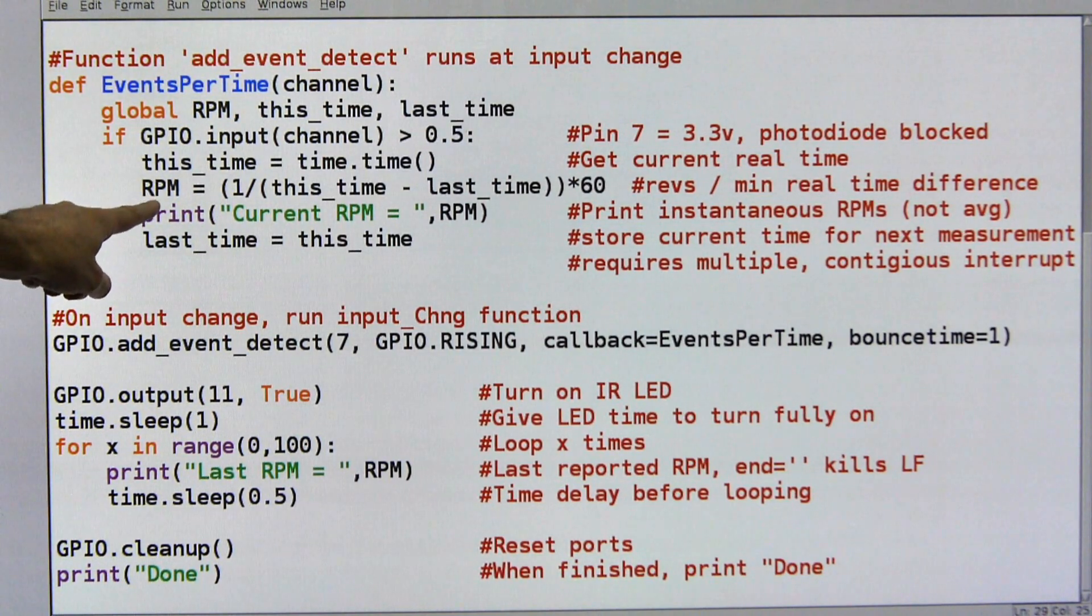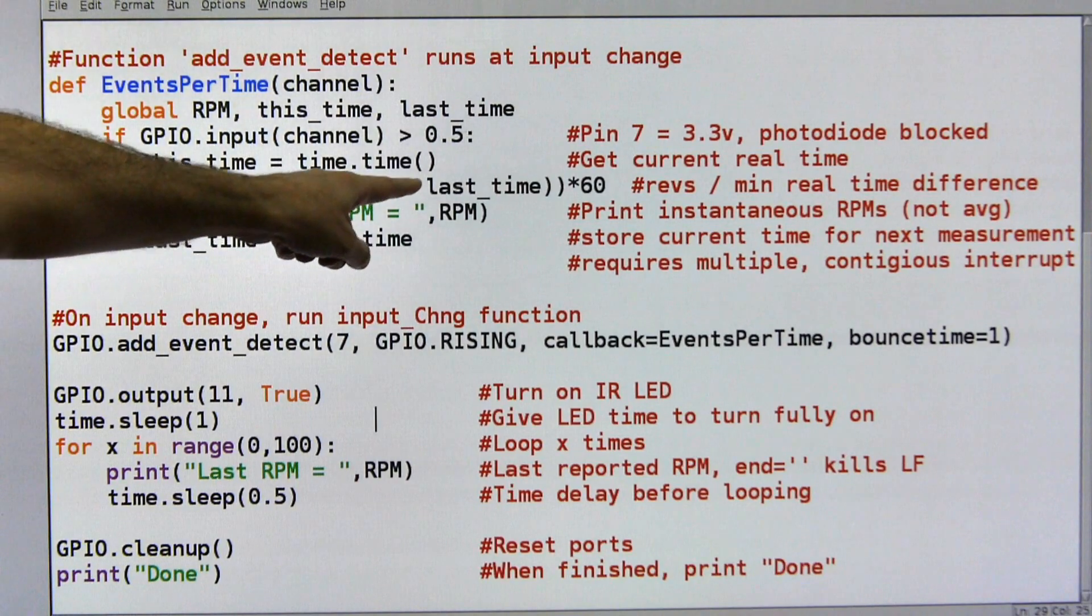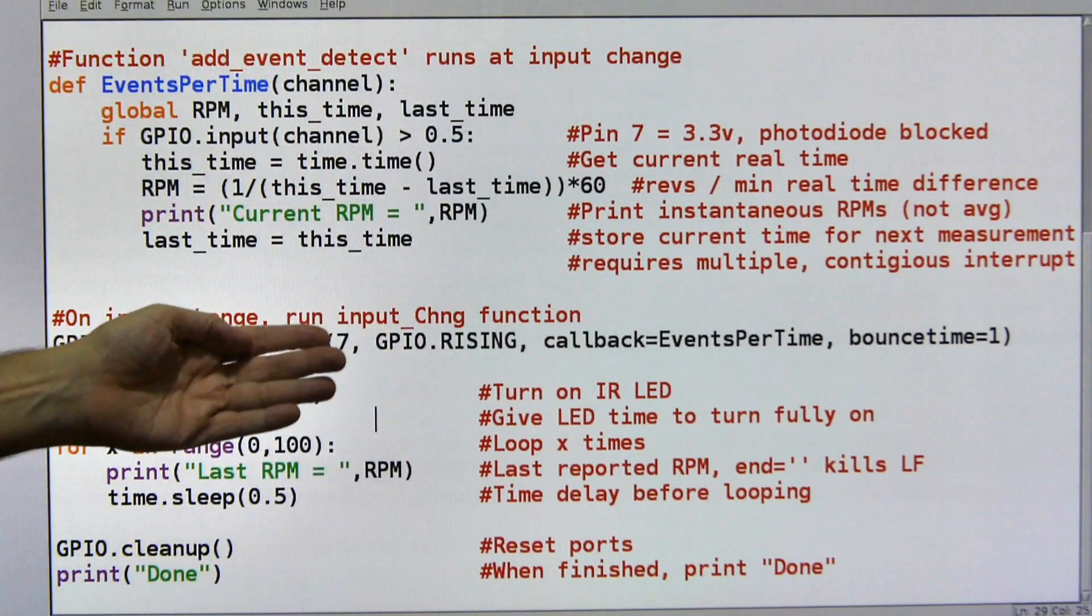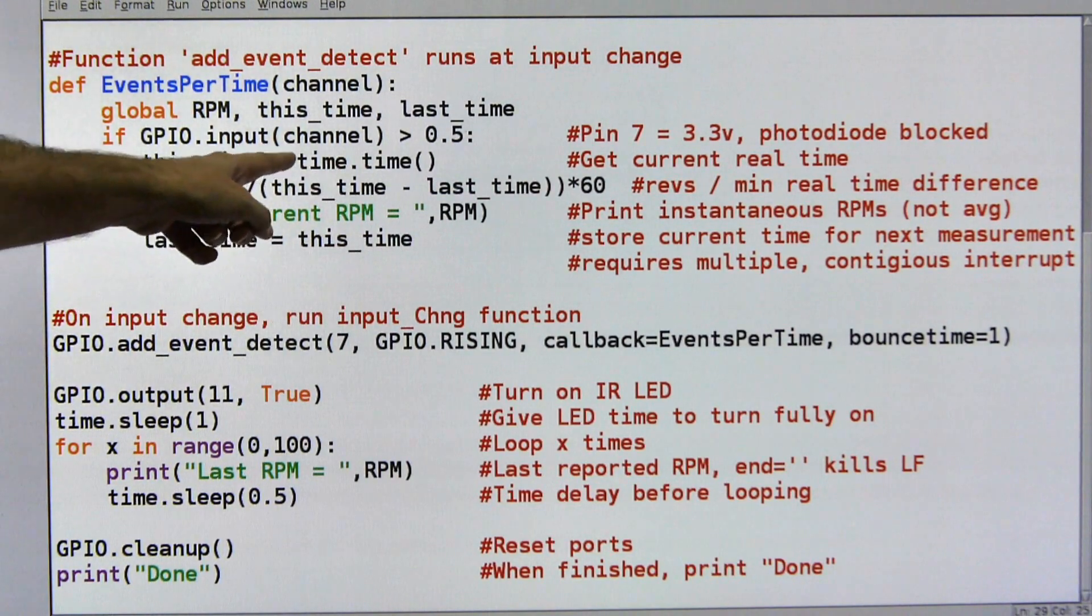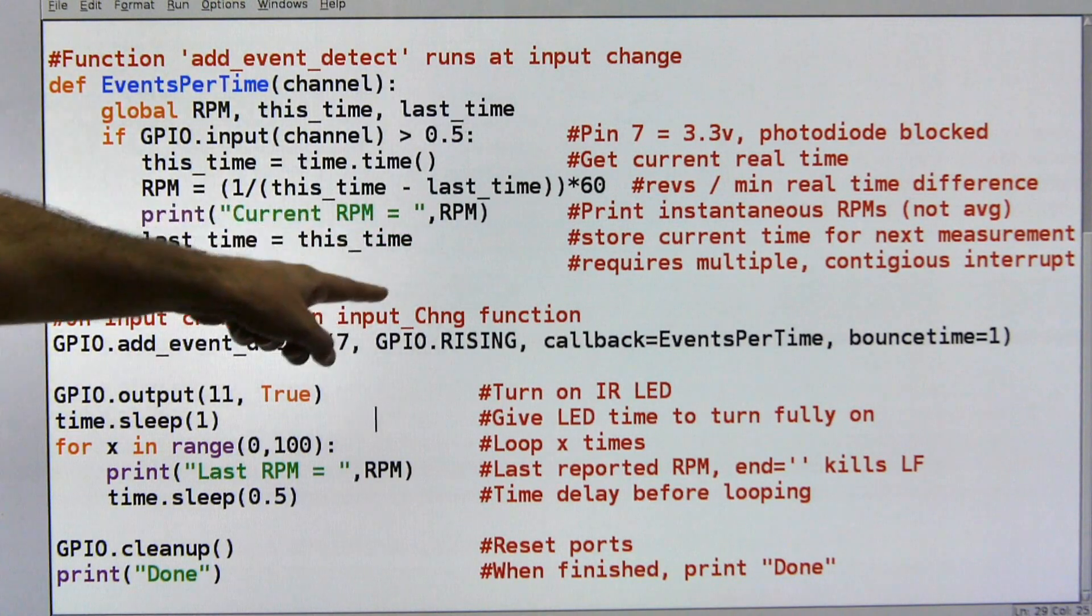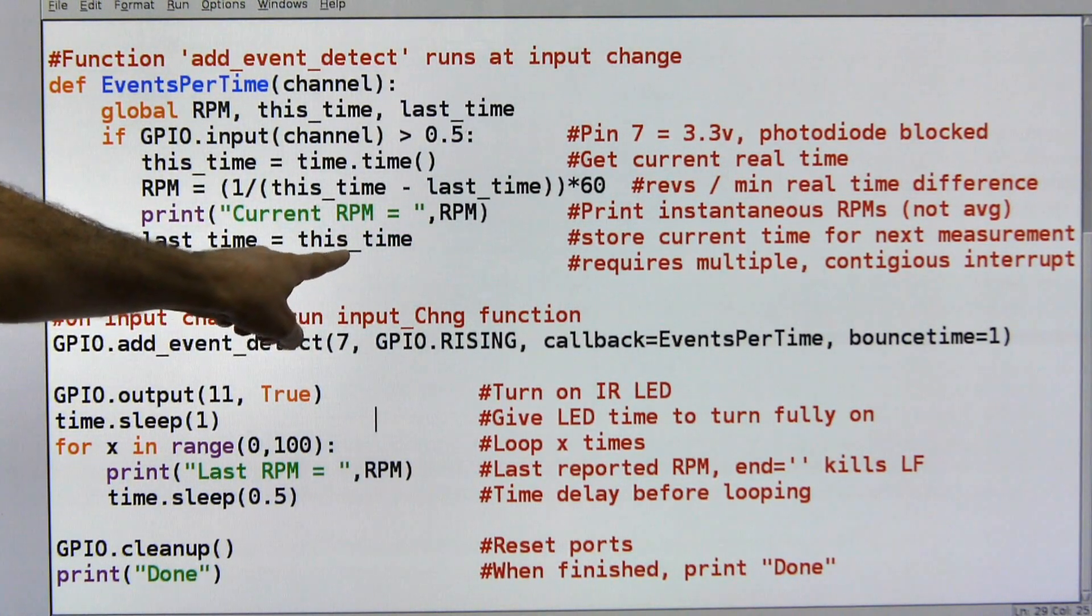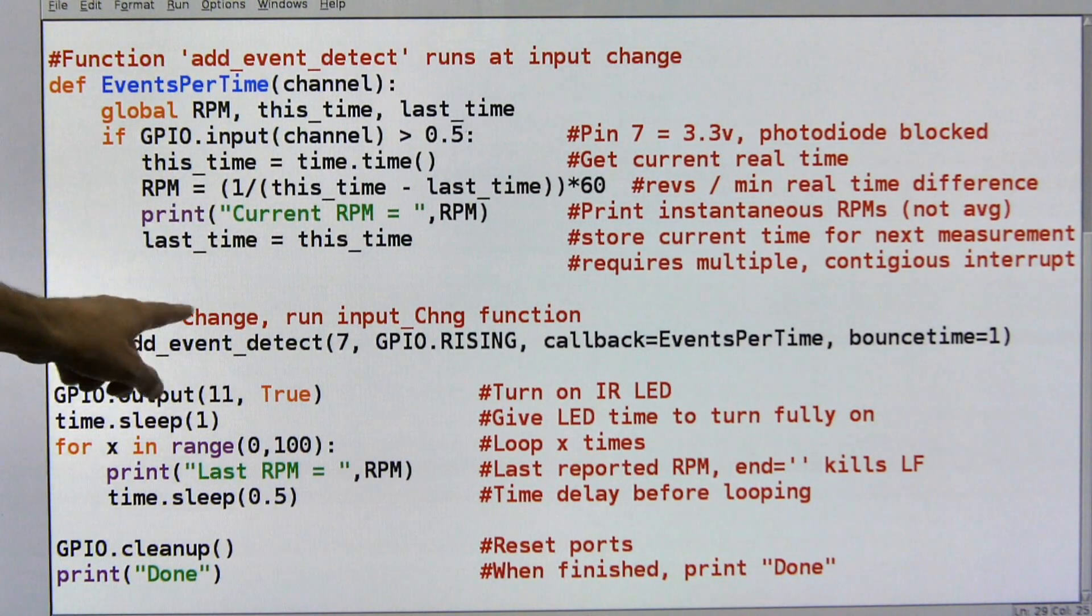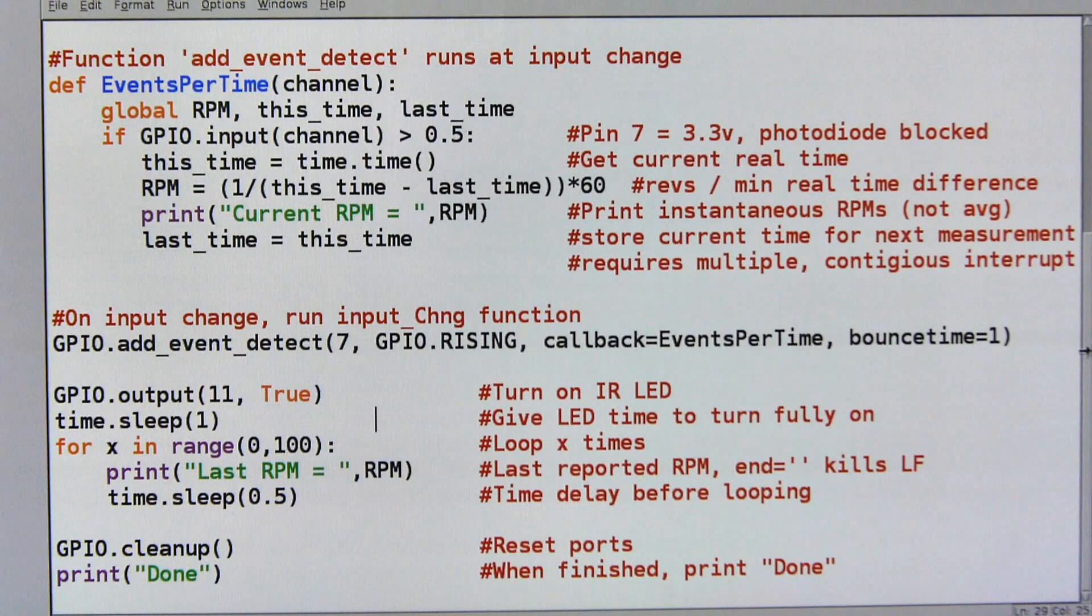And then I'm going to do a little calculation to get the RPM so it's 1 over the current time minus the last time, so the last time the photodiode was blocked, times 60 because the time comes in in seconds. And then I print the current RPM and the RPM value and then I store, I move the current time into the last time so that the next time this happens I have the last time value to calculate with.